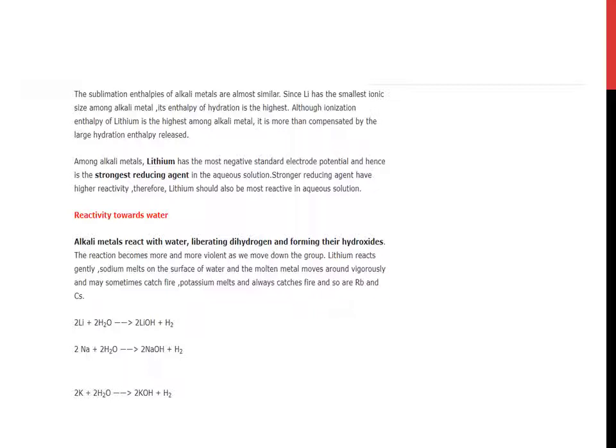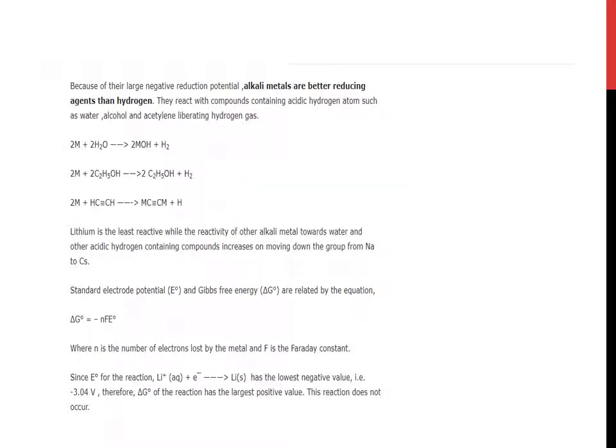So there are some reactions: lithium with water, sodium with water, potassium with water. In these three cases, hydroxides are formed releasing dihydrogen. Because of their large negative electrode potential, alkali metals are better reducing agents than hydrogen. It is quite clear from the above reactions that whenever the metal—lithium, sodium, or potassium—reacts with water, they release hydroxide and hydrogen.